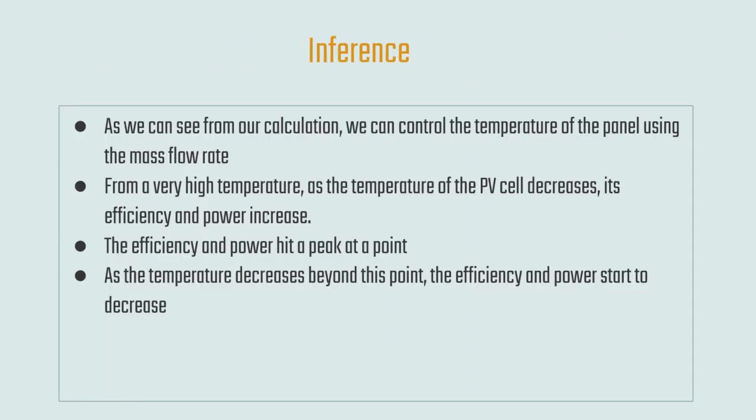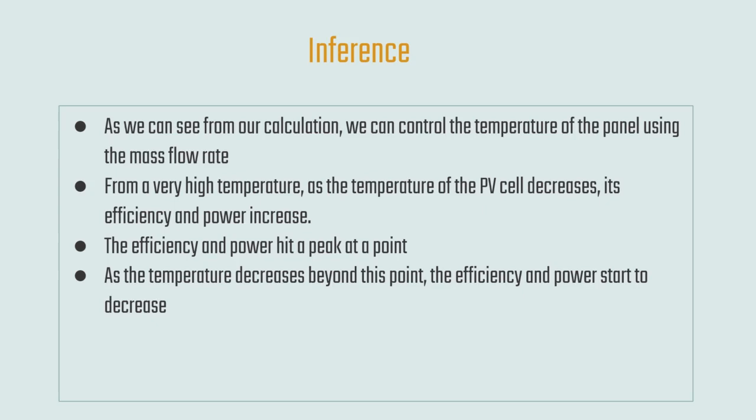Now that we've done our extensive analysis, we draw inferences. First, we can control the temperature of the panel using the mass flow rate. Second, as the temperature of the PV cell decreases from a very high value, its efficiency and power increase. Third, efficiency and power hit a peak at an optimal point, and as the temperature decreases beyond this point, efficiency and power start to decrease again.